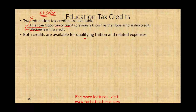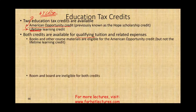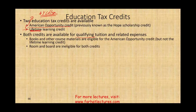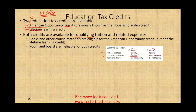Both credits are available for qualifying tuition and related expenses. Books and other materials are eligible for the American Opportunity Credit, but not the Lifetime Learning Credit. Room and board are ineligible for both credits. To summarize: qualified tuition and fees qualify under both; course materials such as books qualify under AOC only; room and board does not qualify under either.